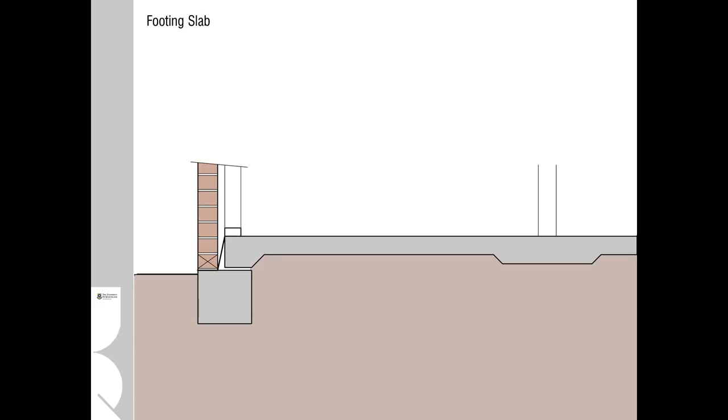Perhaps one of the more common slab and footing solutions is the footing slab. This is a two-part process where the strip footings are cast first and then the slab itself is cast as a second element. Often the two will be joined together with starter bars from the reinforcement from the footing and you'll see also that there are situations where the slab is thickened underneath load-bearing walls.